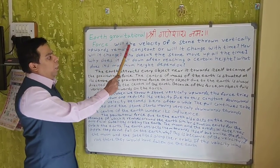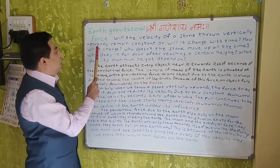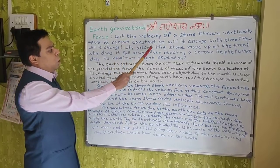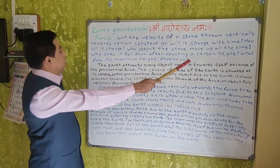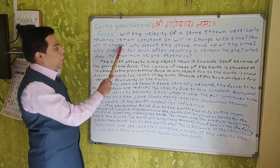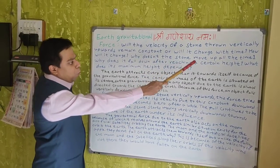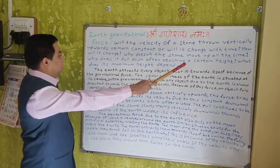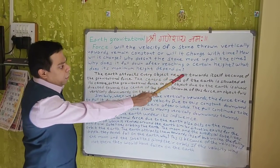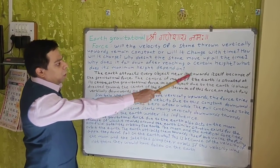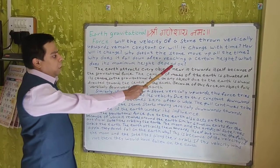Will the velocity of a stone thrown vertically upwards remain constant, or will it change with time? How will it change? Why doesn't the stone move up all the time? Why does it fall down after reaching a certain height? What does its maximum height depend on?